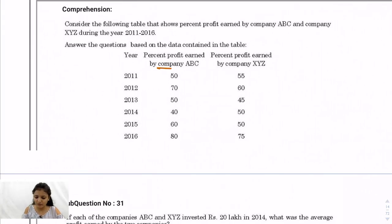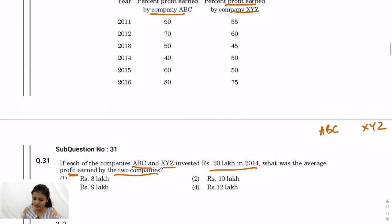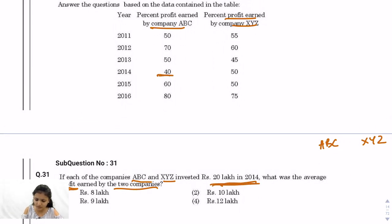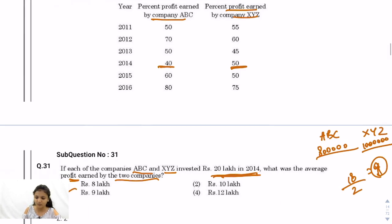DI Questions 31–35: Profit earned by companies ABC and XYZ. Question 31: Each company invested Rs. 20 lakhs in 2014. ABC's profit at 40% = 8 lakhs; XYZ's profit at 50% = 10 lakhs. Average profit = (8 + 10) / 2 = 9 lakhs. The correct answer is option 3.